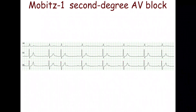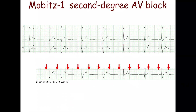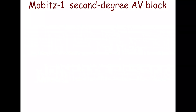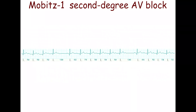Occasionally, atrioventricular block with a 2 to 1 conduction ratio is seen, accompanied by the occasional conduction of 2 consecutive P waves. If PR interval prolongation is observed, Mobitz 1 is the cause of the 2 to 1 conduction ratio. If the cycles are short enough, it is easy to see that the RR interval becomes progressively shorter with each beat. However, the last RR interval in the cycle following a non-conducted P wave may be slightly longer.